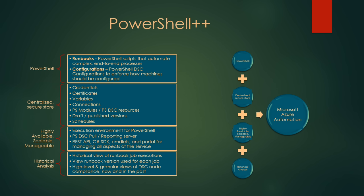You also get a scheduling engine. We added webhook support in May, draft and publish versioning so you can work on the runbook while the production version is still running on schedules and being started by other runbooks. It's also highly available, scalable, and manageable. For DSC, you get a pull service hosted in the cloud — no more setting up a pull server. You just set up an automation account by clicking one button and then you have a pull service. We have a full REST API, .NET SDK, commandlet support, and a portal for managing all this, starting runbook executions, viewing output and jobs, basically everything you can do around PowerShell management.